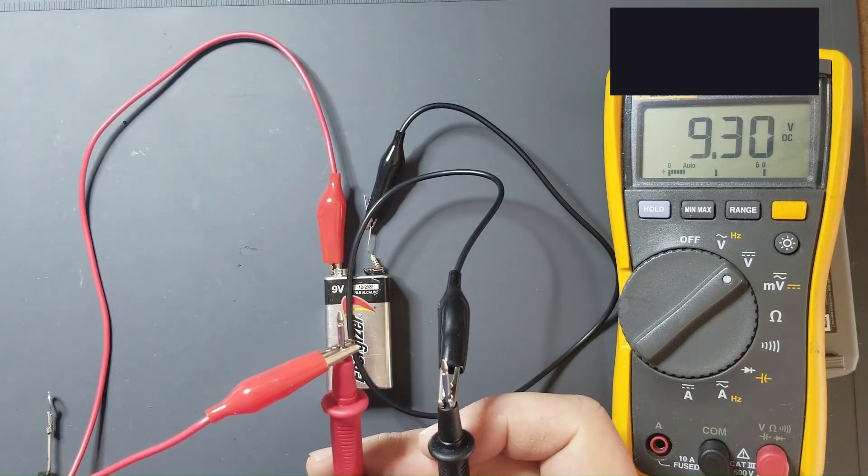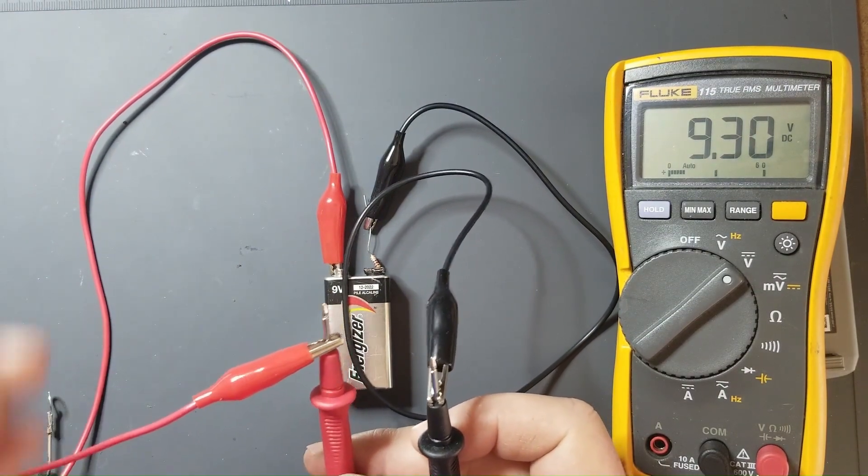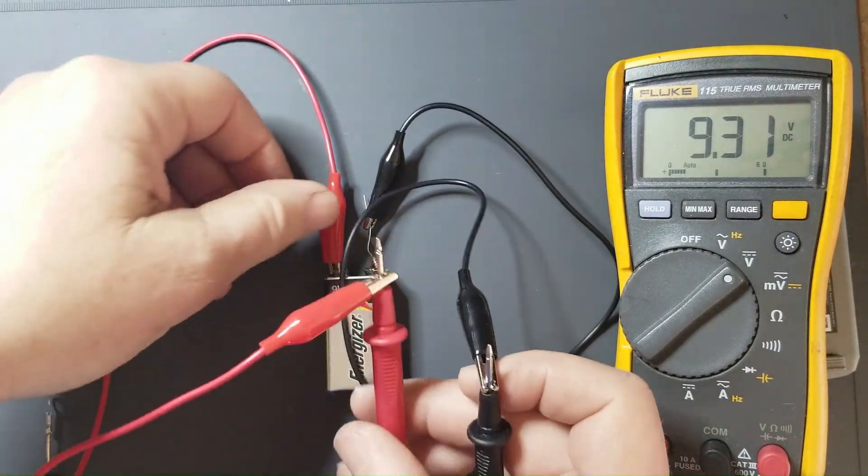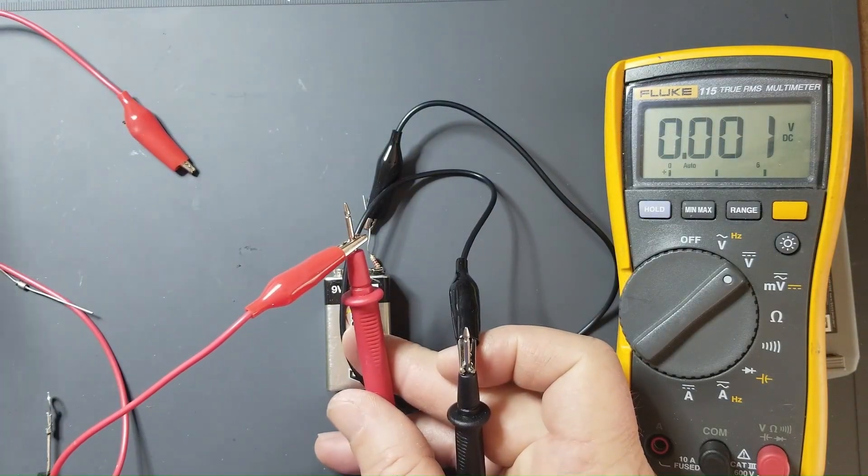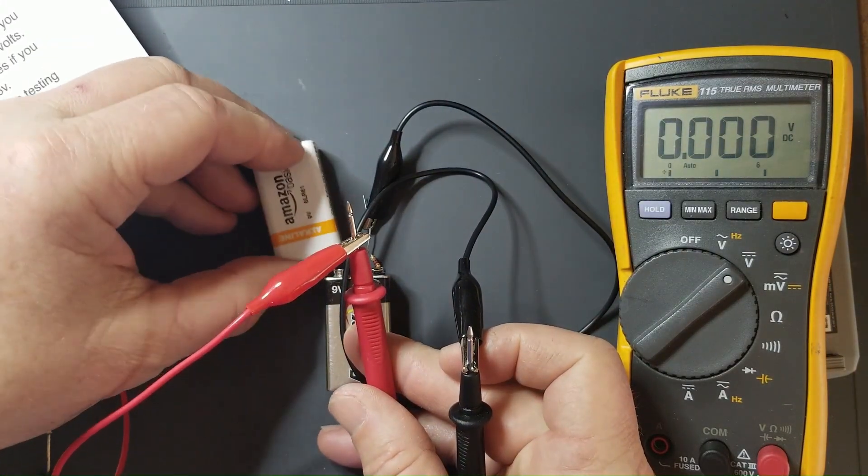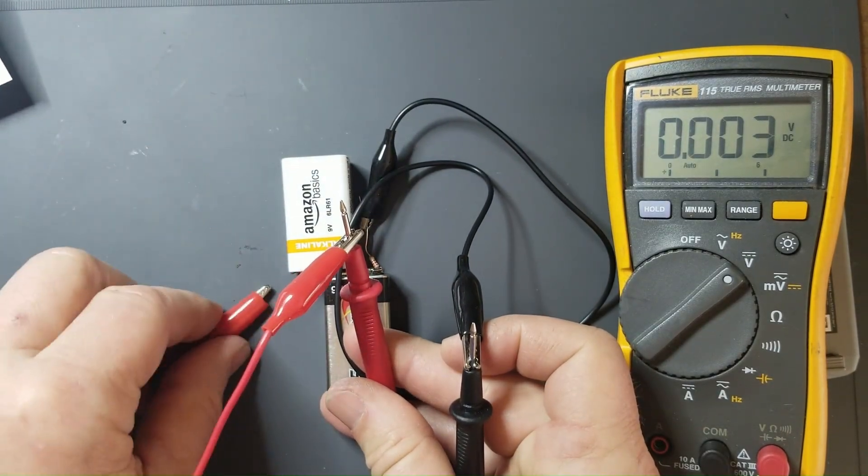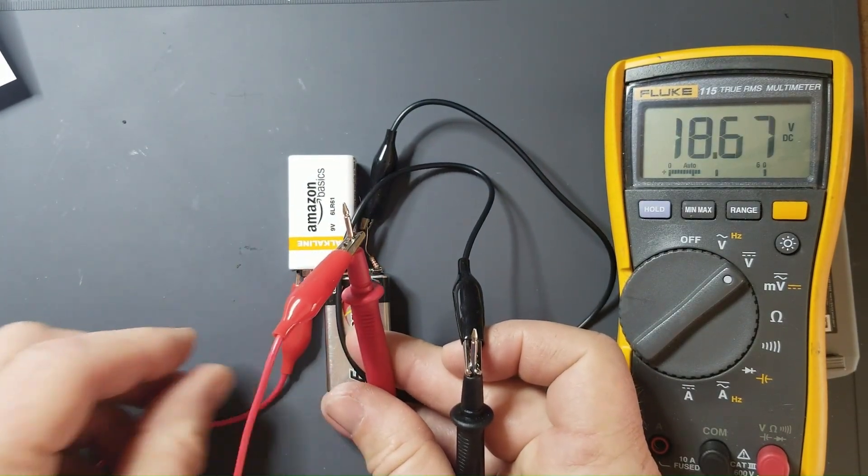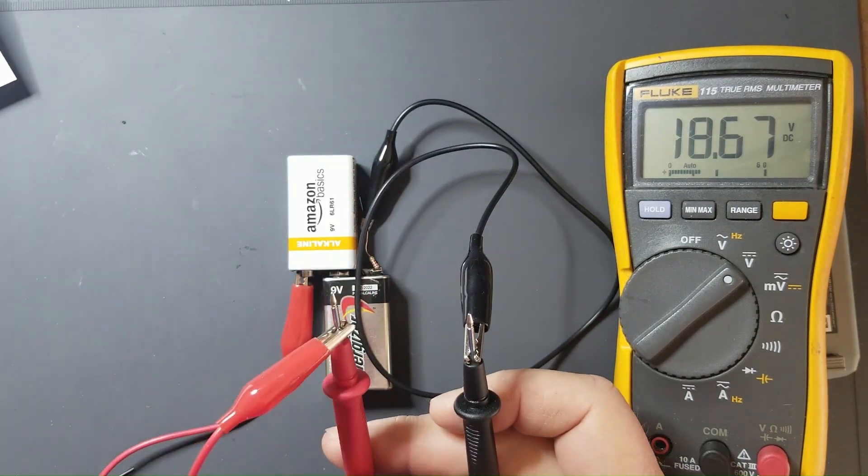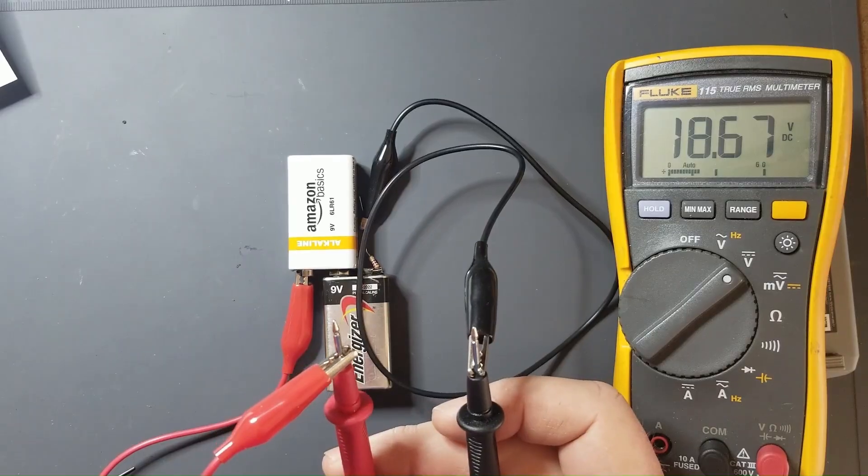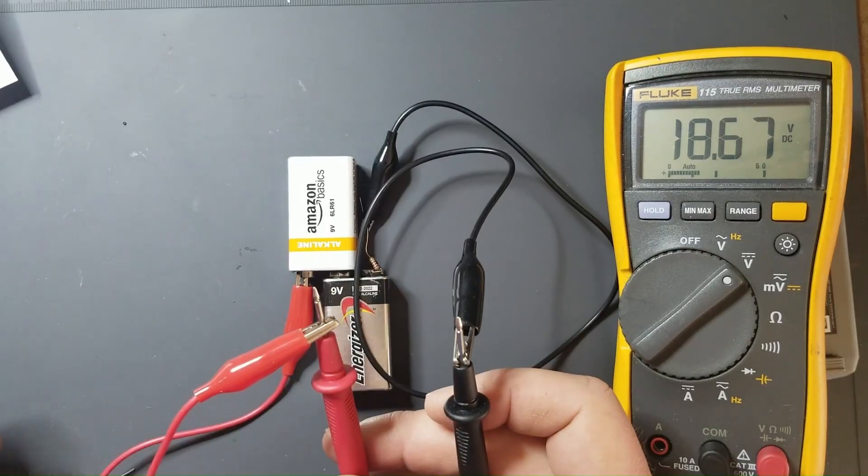Now some Zener diodes have very high reverse voltage drops that would exceed the 9 volts of this battery here. So in this case you could just stack another battery here. Simply add another battery, stack it right in, plug it in and connect this. Now we have an 18.6 volt current limited voltage source so we can test all kinds of things. You can still test LEDs and your microwave diodes with this as well.